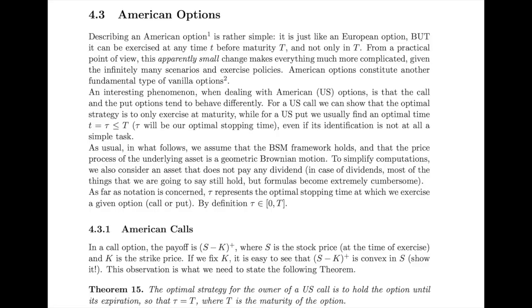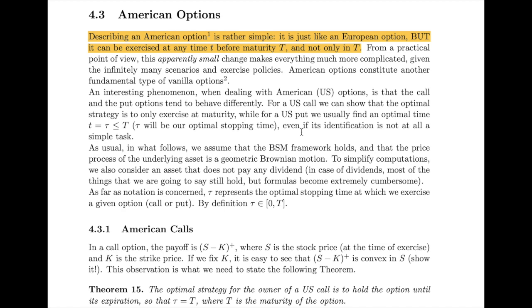Let's see why the American call, in this framework, behaves like a European call. When we consider American options, the big difference is that we can exercise the option at any time between zero and capital T. This apparently small difference has, in reality, big consequences — in particular for the American put, for which we do not have an analytical closed-form solution. As usual, let's assume that the value of the underlying asset follows a geometric Brownian motion. We need a little lemma that tells us something very important concerning martingales and convex functions.